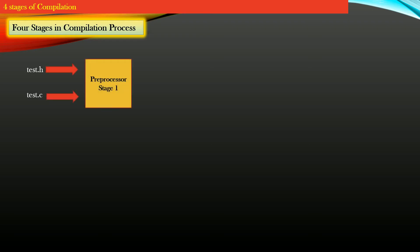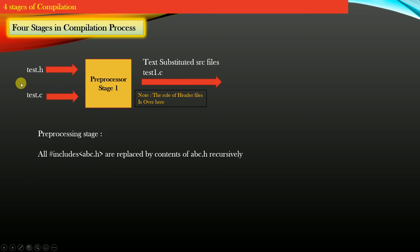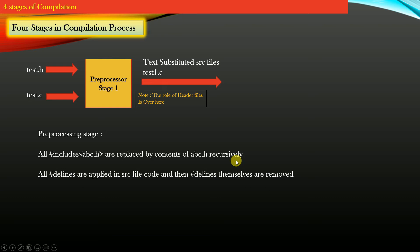We will take a very simple file test.h and test.c and subject this file to the pre-processing stage to create a text-substituted source file called test1.c. After stage 1 itself, the role of the header file is over — there is no more header file required after the text substitution phase. Pre-processing is the first stage of the compilation process, where all the hash includes present in the source file are replaced by the contents of the actual header file, and it happens recursively.